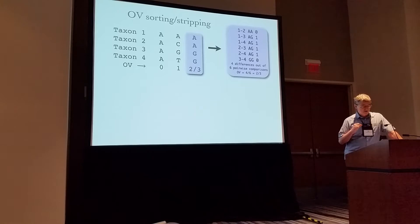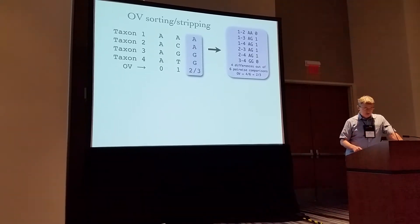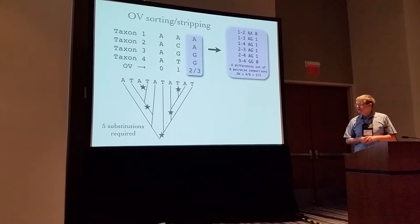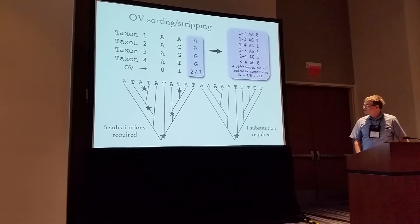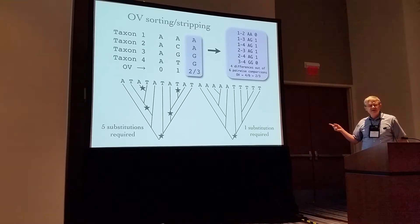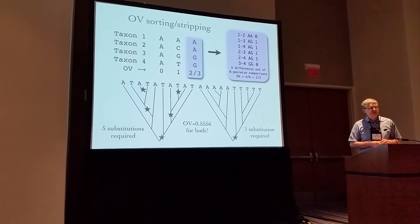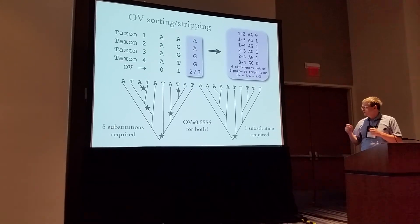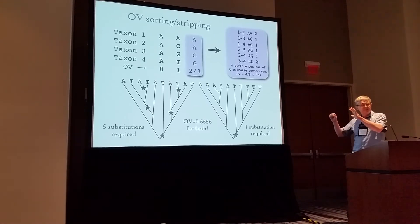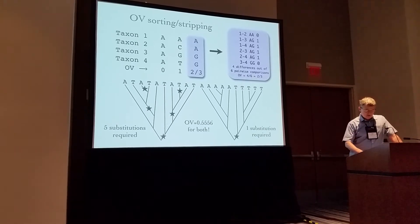This advantage is somewhat illusory, because the tree topology is critical for determining whether a site is noisy or not. For example, here's a case where five substitutions at minimum are required to explain the data based on one tree topology, but the same data can be explained by just one substitution on an alternative topology. So we can't always distinguish between noisy sites and well-behaved sites that simply change in the middle of the tree — yielding a large group of taxa with one state and a large group with another, producing many pairwise differences in OV.